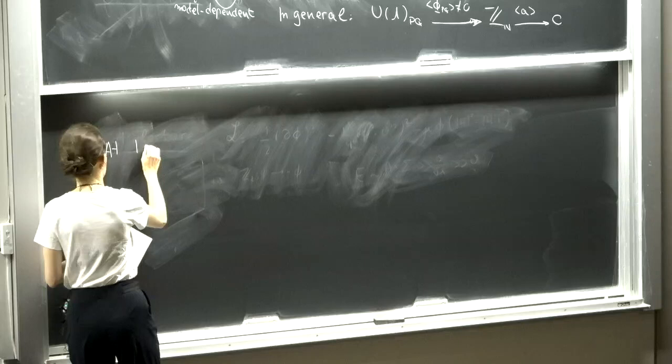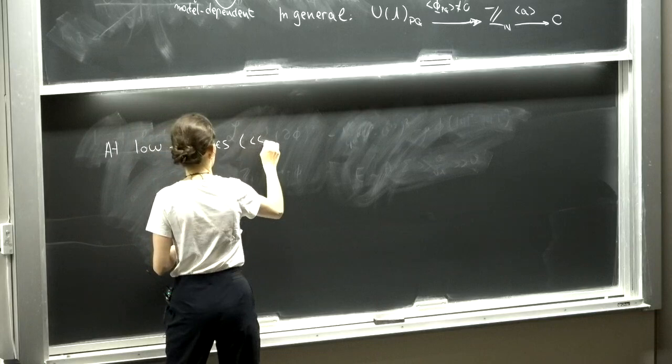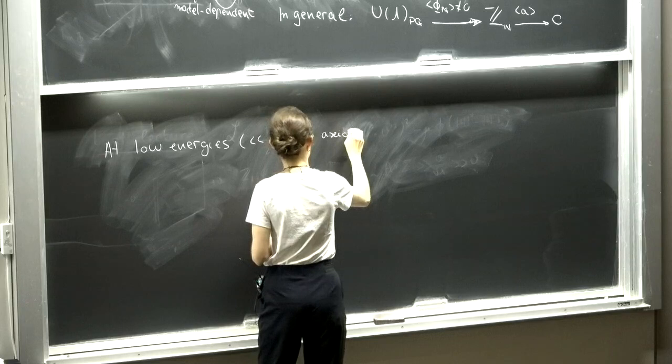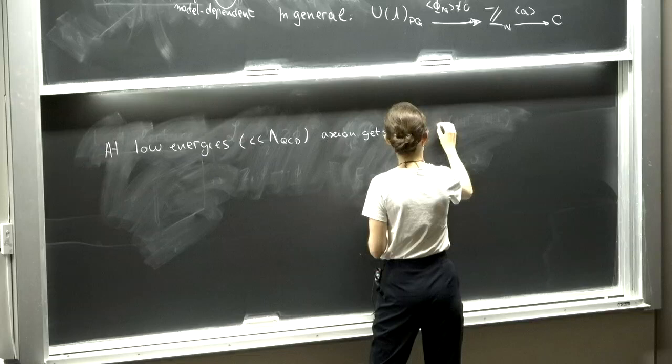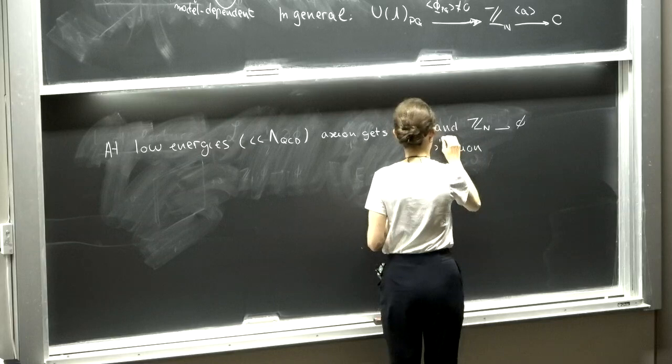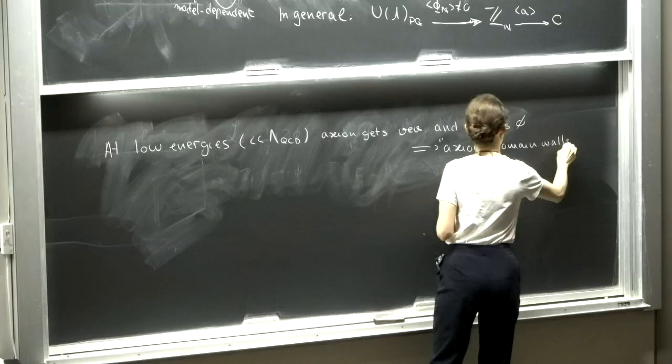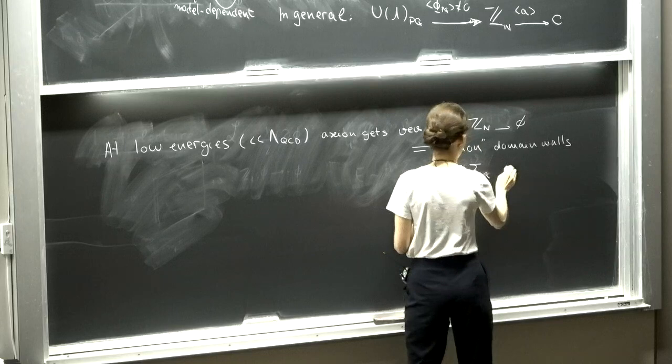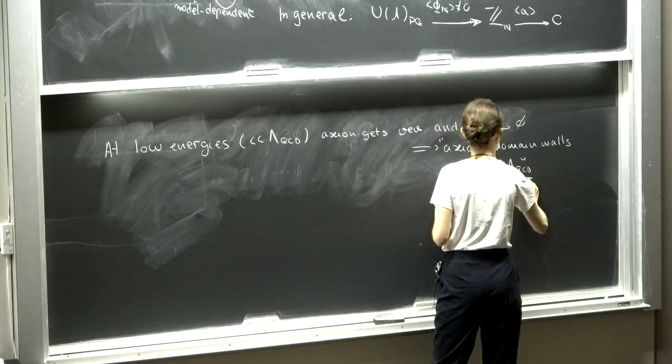At low energies, well below the QCD scale, the axion gets a vacuum expectation value and the Z_N symmetry is now spontaneously broken completely. So this theory also contains what we call axion domain walls. An analysis from the effective Lagrangian will tell you that these axion domain walls carry tension — proportional to the QCD energy density divided by the axion mass.